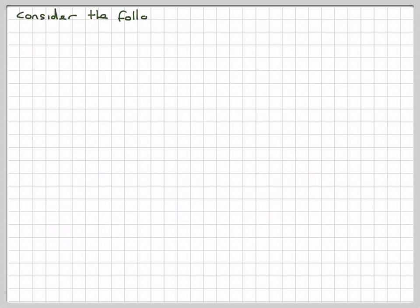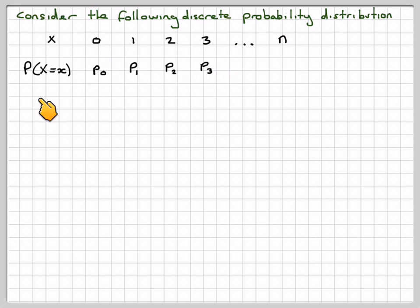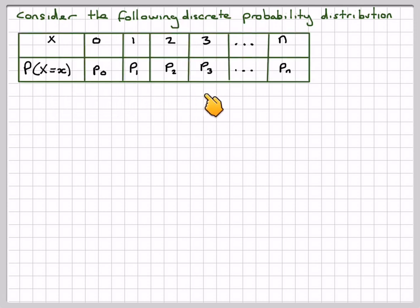Now consider the following discrete probability distribution. We have X taking values 0, 1, 2, 3, ..., n, with probabilities P(X = x) equal to P0, P1, P2, P3, ..., Pn.